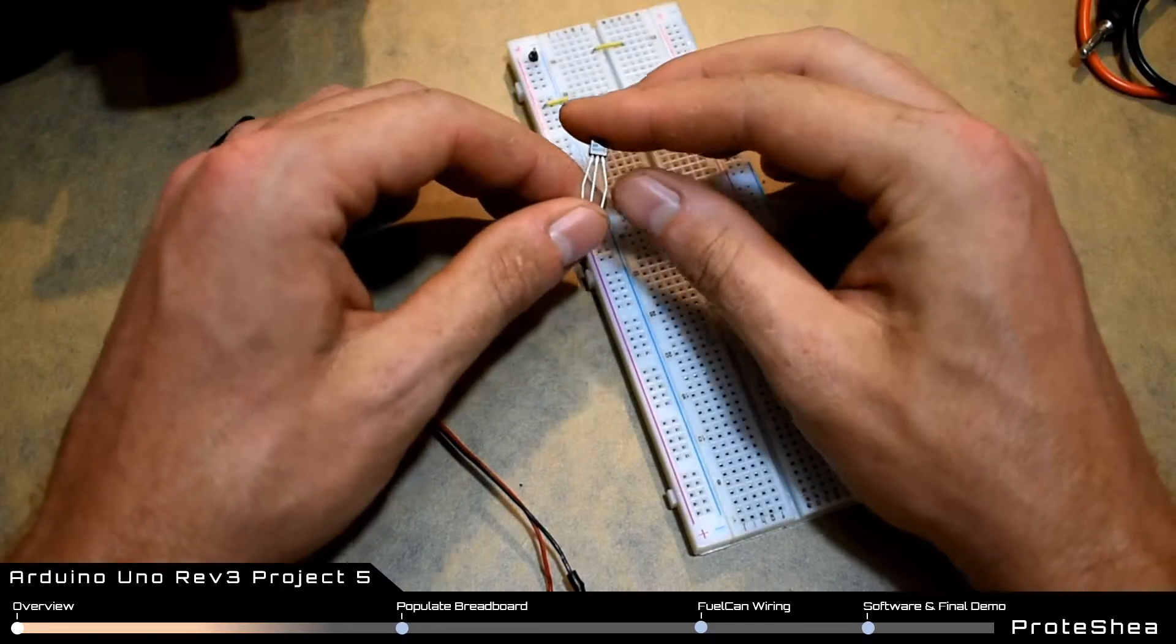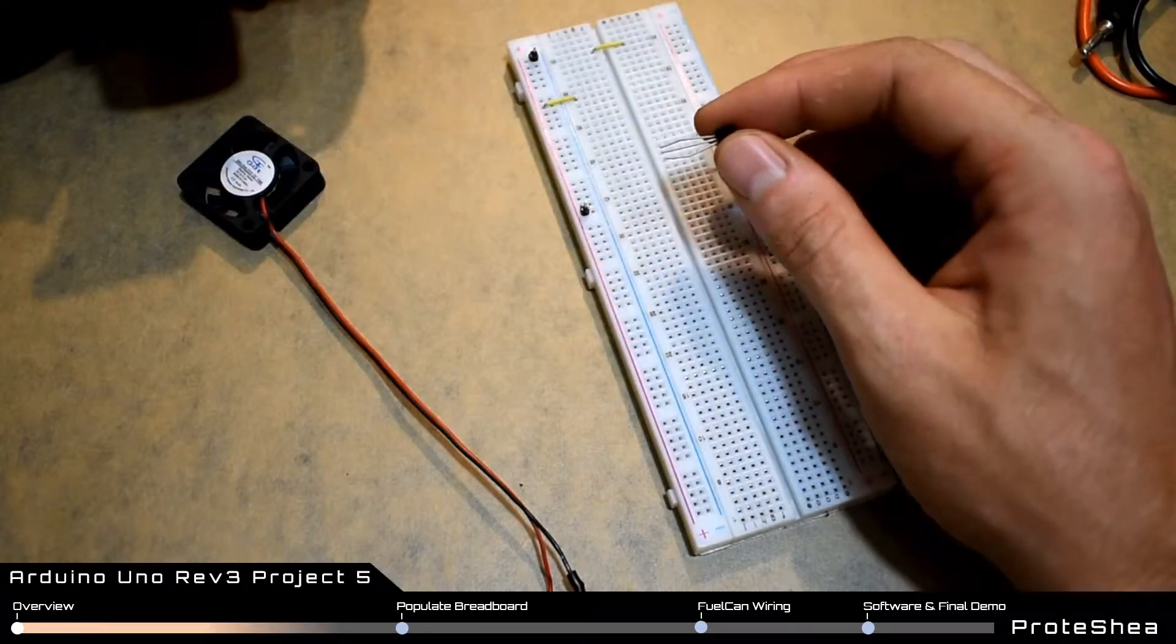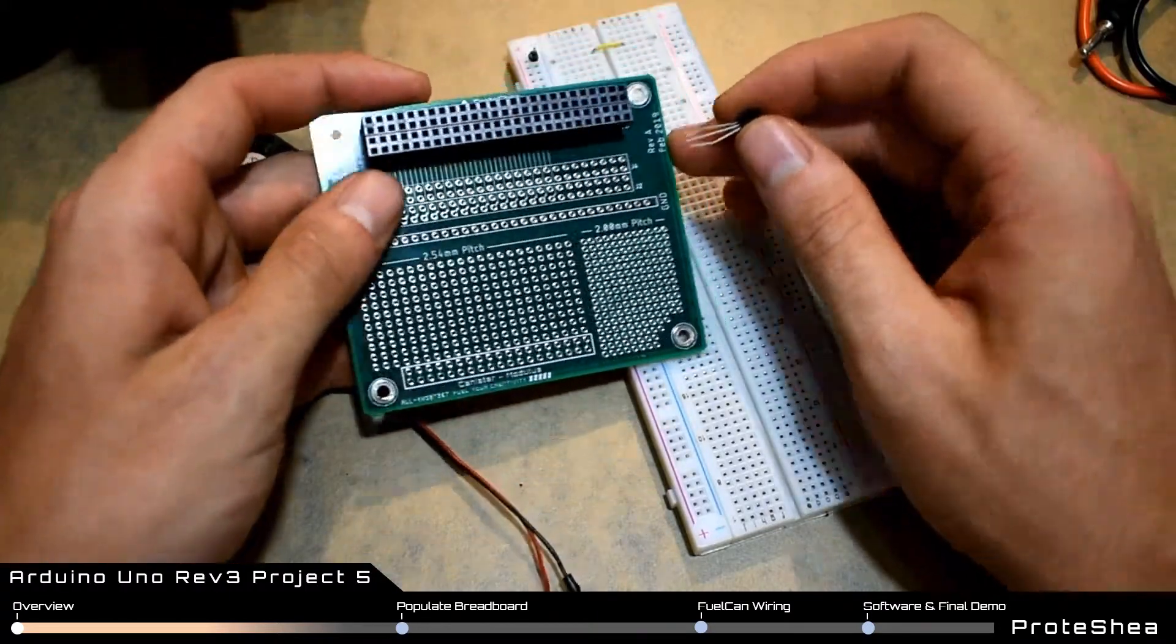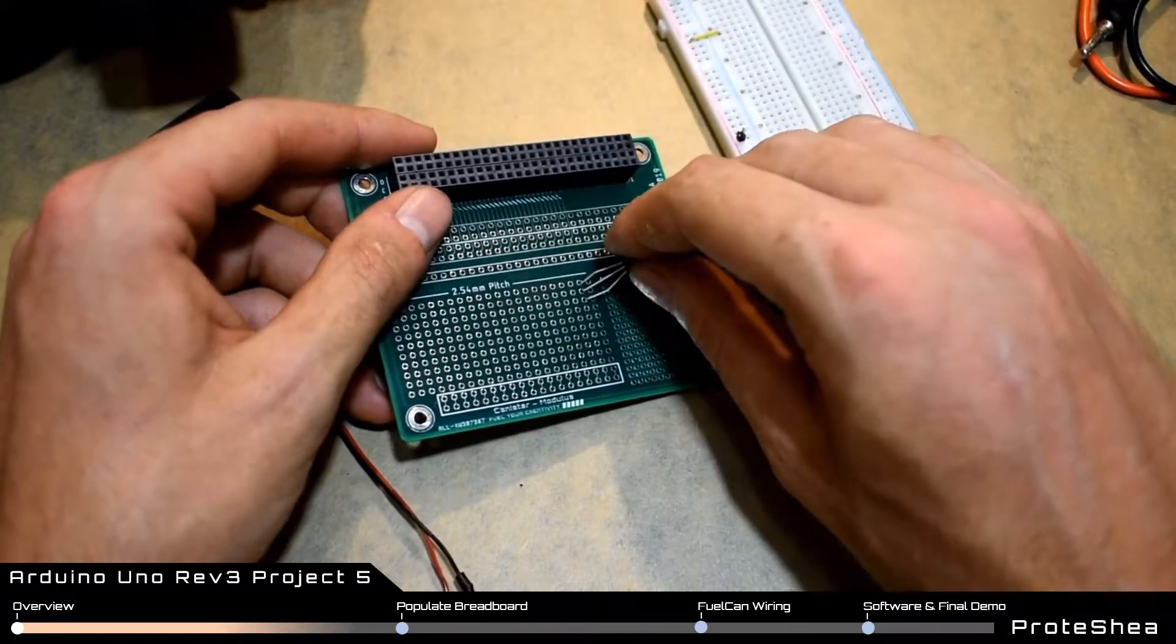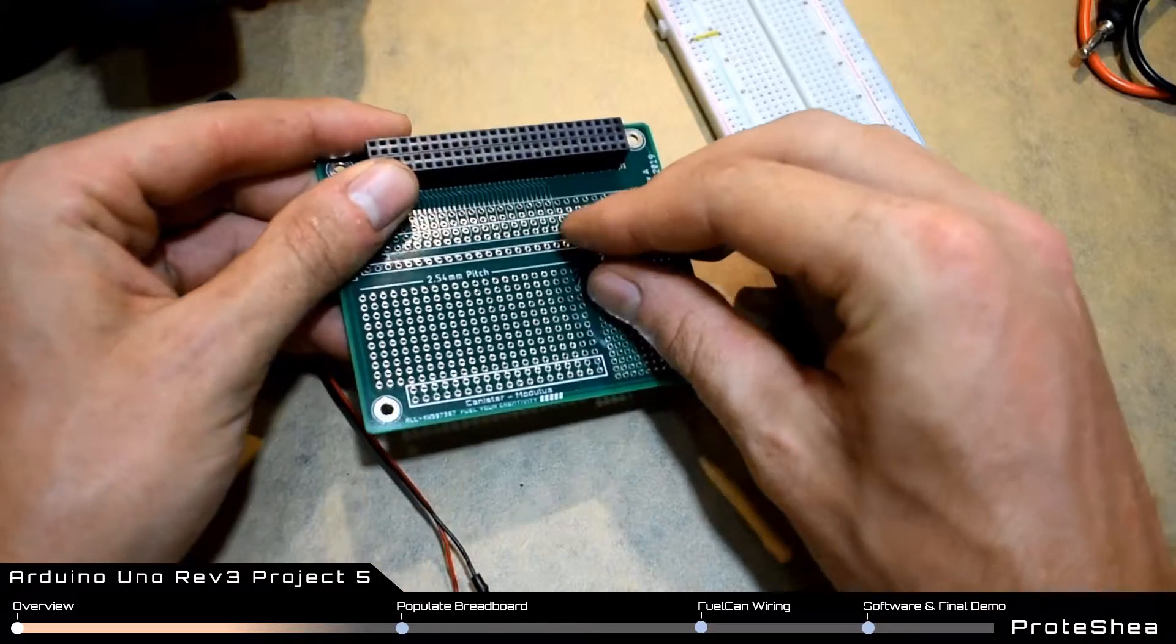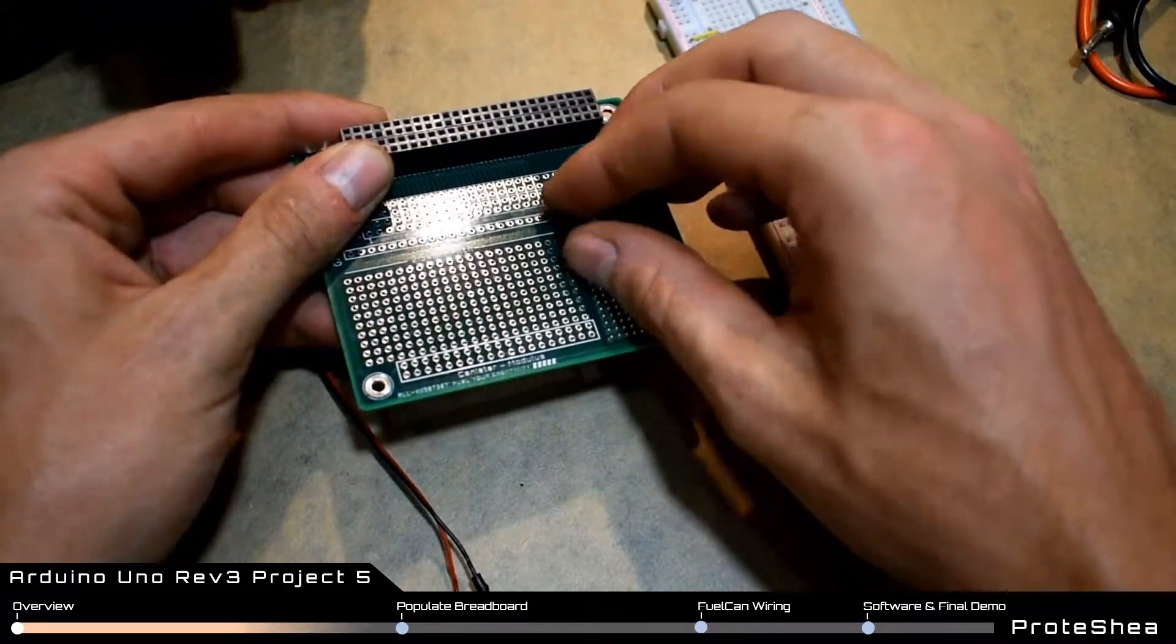We're using a through-hole N-channel MOSFET which you can solder to modules and then interface to the Arduino UNO.